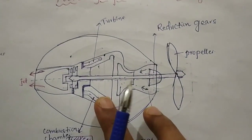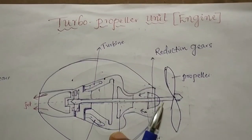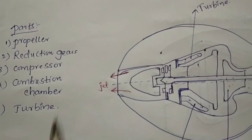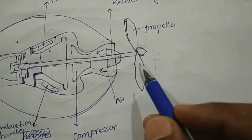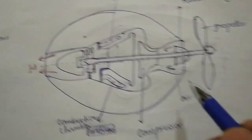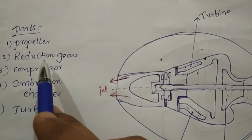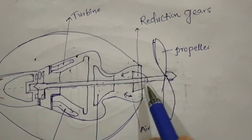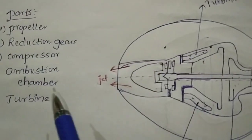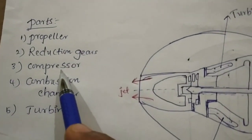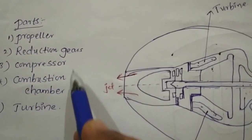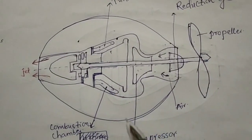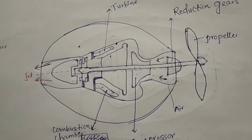This is the diagram of the turbo propeller jet unit engine. It consists of mainly five parts. First is the propeller, placed in front of the aircraft. Next are the reduction gears, placed before the propeller to control the speed of the propeller. Then the compressor, combustion chamber, and turbine — these three are the parts of the open cycle gas turbine.